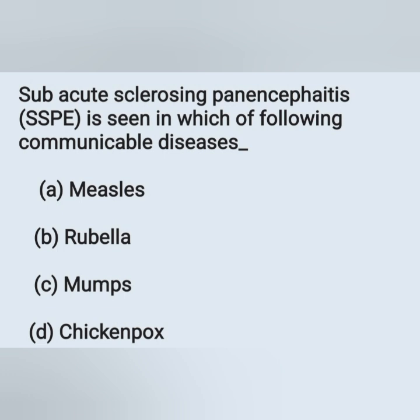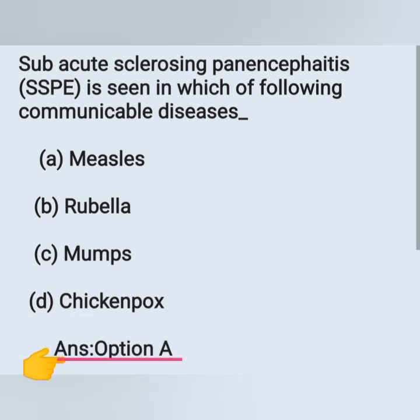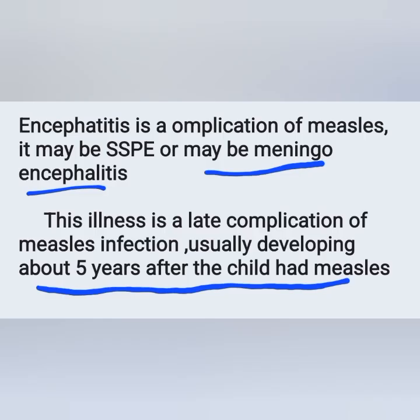SSPE — subacute sclerosing panencephalitis — is seen in which communicable disease? It is seen in case of measles. Option A is the correct answer. Encephalitis is a complication of measles; it may be SSPE or meningoencephalitis. This illness is a late complication of measles infection, usually developing about 5 years after the child had measles.